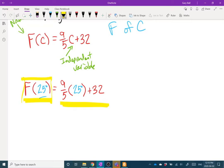If I go through that equation, 9 times 25 divided by 5, and then add 32 to the end answer, what I end up with is f of 25 degrees equals 77 degrees.